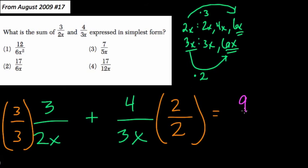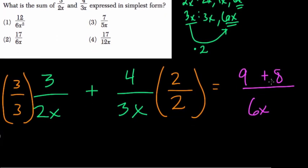So 3 times 3 is 9. 4 times 2 is 8, plus 8. And it's all over 6x now, because 3x times 2 is 6x, and 3 times 2x is also 6x. And basically, we get 9 plus 8, which is 17, over 6x, our final answer.